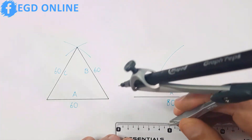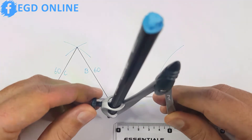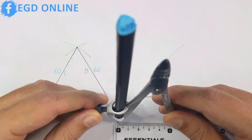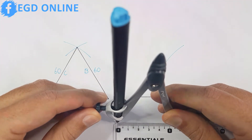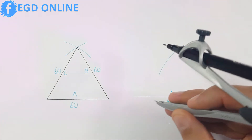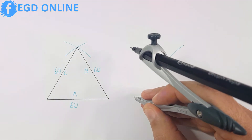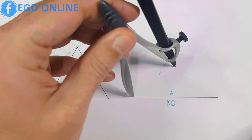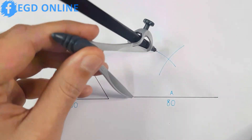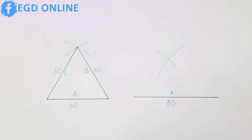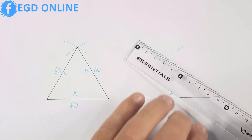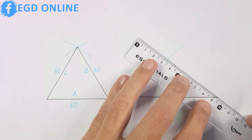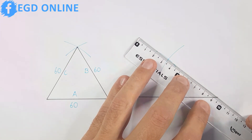And for my other side that is 50, I will adjust my compass to 50 and place it on the opposite end of side A and also draw an arc above side A. Lastly, I will take my ruler and place it on the crossing point and join the crossing point to both ends of side A.